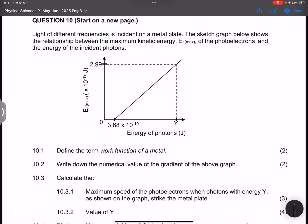Let's look at the last question. They say light of different frequencies is incident on a metal plate. The sketch graph below shows the relationship between the maximum kinetic energy, Ek max, of the photoelectrons and the energy of the incident photons.